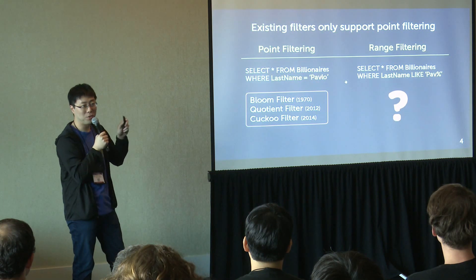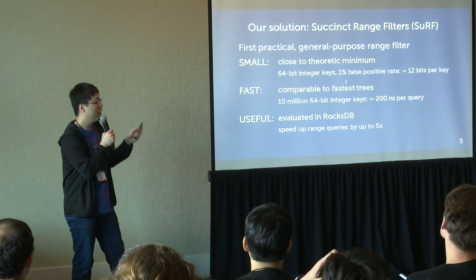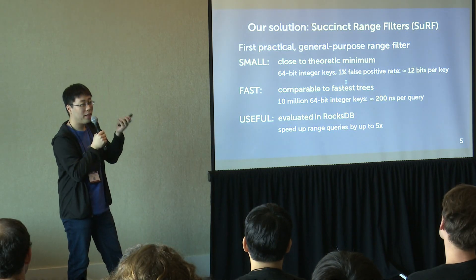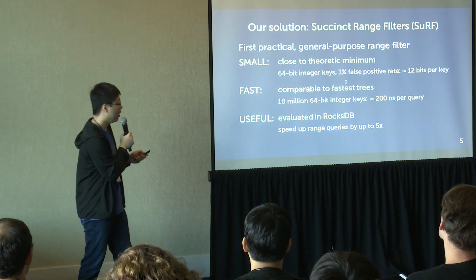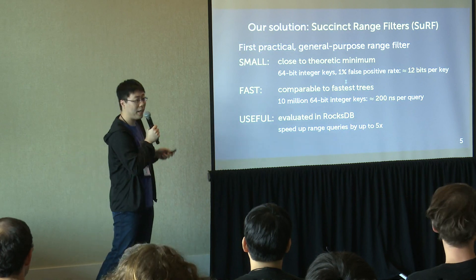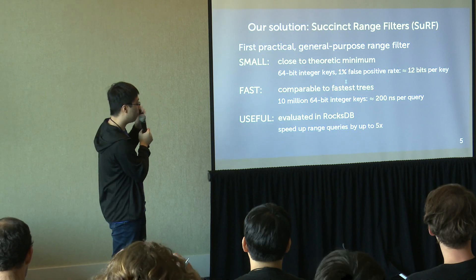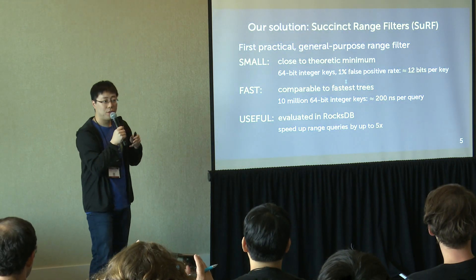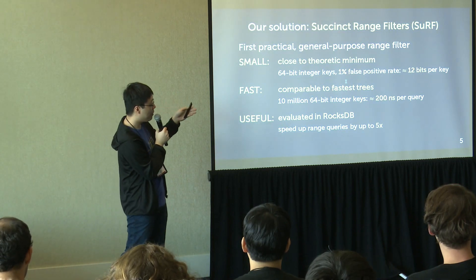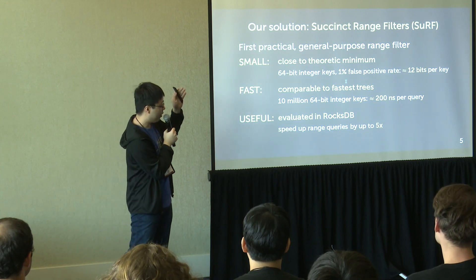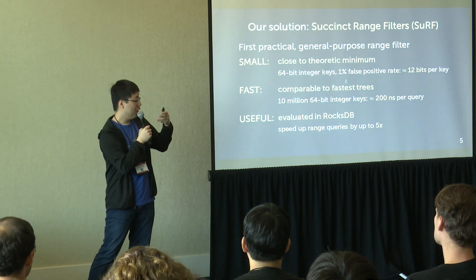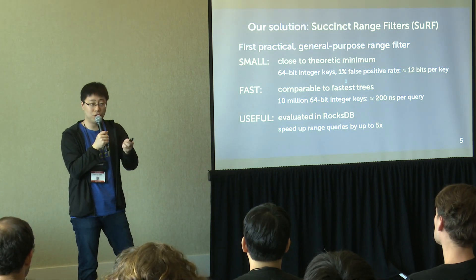That is exactly what we attempt to solve in this paper. Our solution is called SURF. To the best of our knowledge, SURF is the first practical and general-purpose range filter. It supports filtering both point and range queries for any variable-length keys. SURF is very small — it uses succinct encoding to achieve space close to the theoretic minimum. For 64-bit integer keys, SURF only requires around 12 bits per key to achieve a 1% false positive rate. Meanwhile, SURF maintains high performance comparable to the fastest tree implementations. A SURF containing 10 million 64-bit integer keys can perform queries in around 200 nanoseconds per query. When we integrated SURF into RocksDB, we observed a speedup in range queries by up to 5x due to the number of IOs saved.